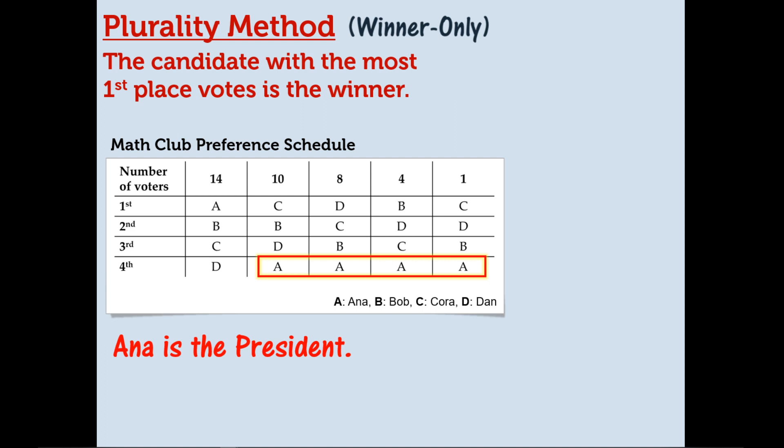But I want you to take note of something. Anna got the most first place votes of all the candidates. However, if you look at all the other piles, she was their least favorite candidate. And if you combine those, there are actually more people who didn't prefer her — more people who ranked her as their least favorite candidate. And that's one of the weaknesses of the plurality method: you can have a winner, but a lot of other people had that person as their least favorite candidate.